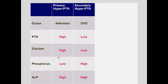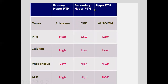Remember that calcium and phosphorus in most conditions move in opposite directions. Alkaline phosphatase is high in secondary hyperparathyroidism. In hypoparathyroidism, the most common cause is autoimmunity: PTH is low, calcium is low, and phosphorus is high. In secondary hyperparathyroidism the cause is CKD, so other parameters help identify it, and alkaline phosphatase will be normal.